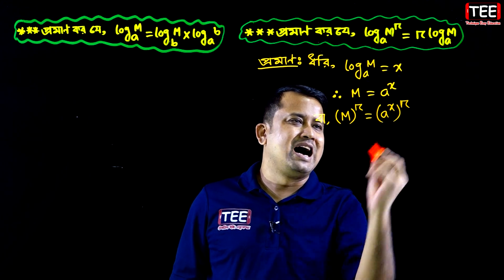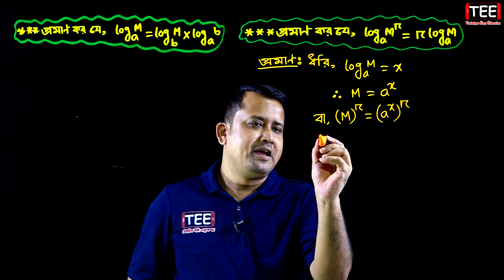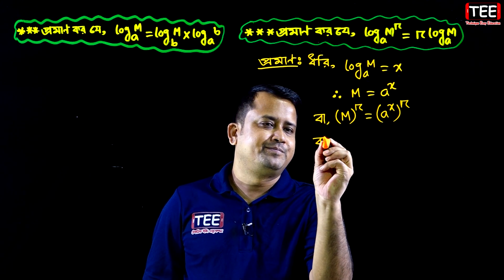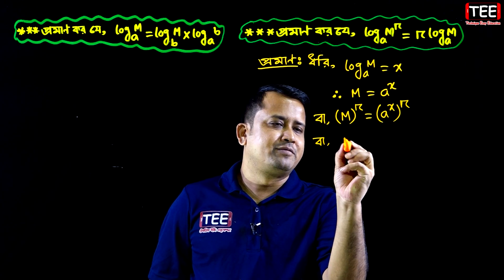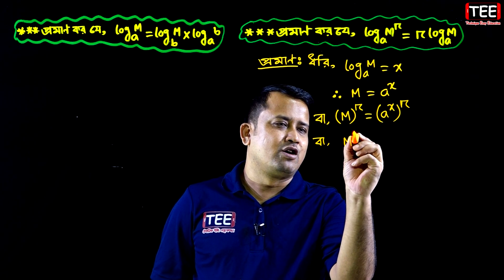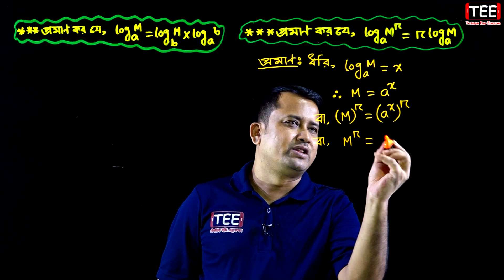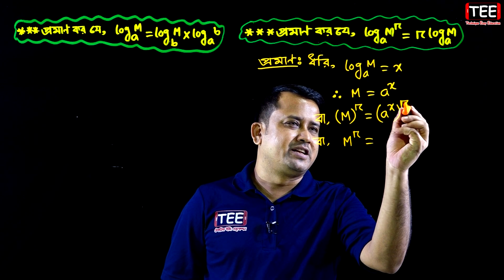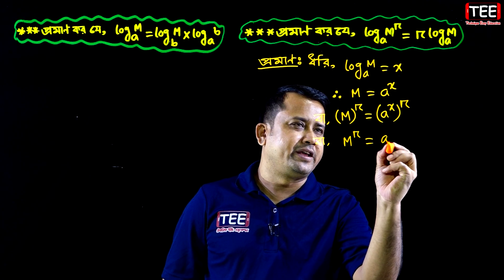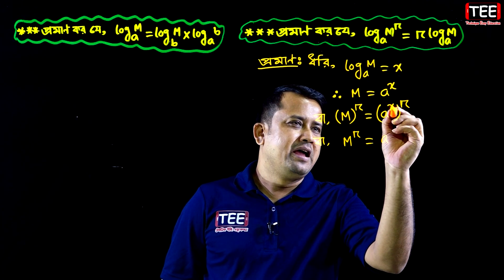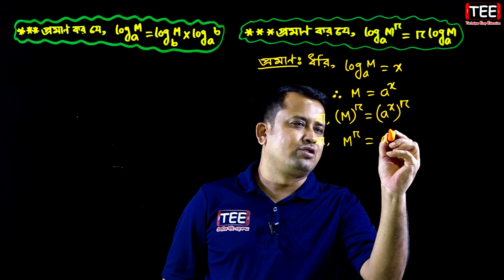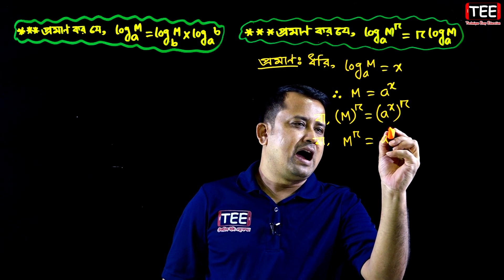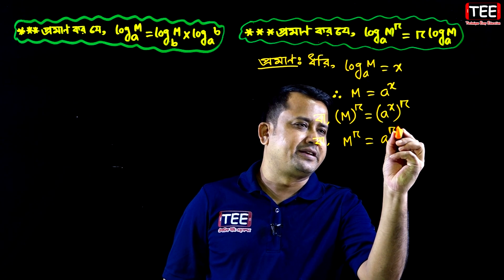Let log base a of m equal x. Then on both sides, m to the power r will equal a to the power x. After raising to the power r, we get a to the power xr on the right side.